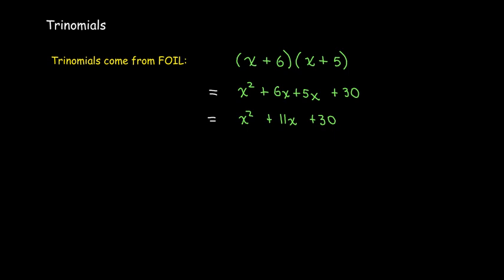The linear terms combined, giving x² + 11x + 30, so one term in the middle. And if I needed to work backwards, I have all of the information encoded in the coefficient for the linear term and in the constant term.